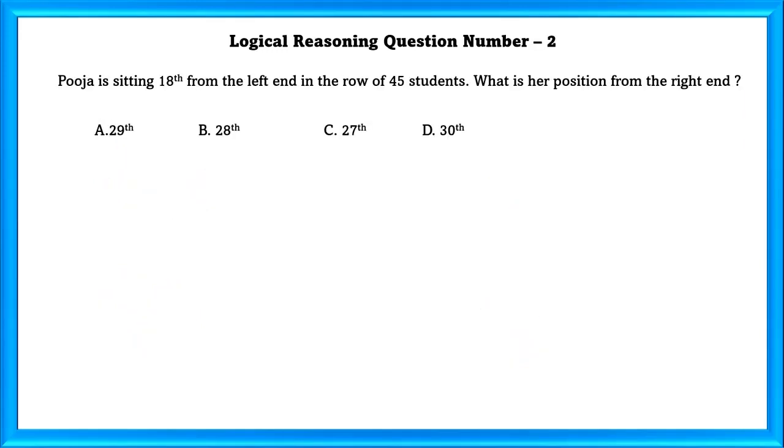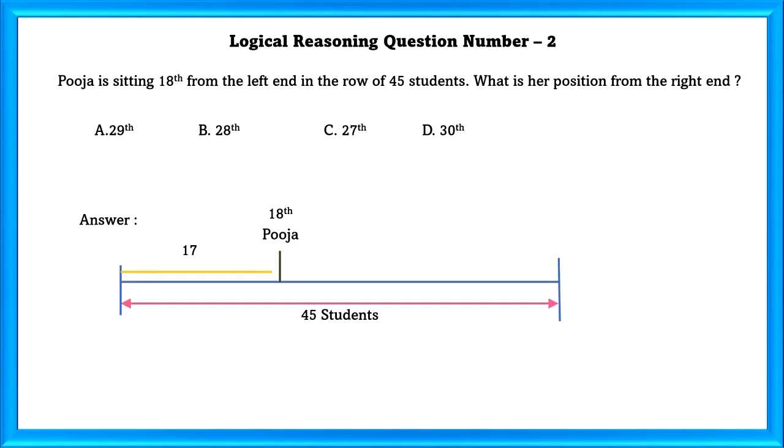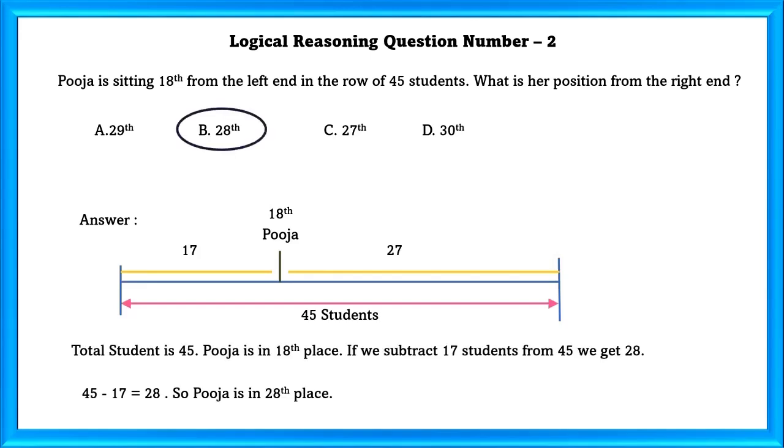Question Number 2: Pooja is sitting 18th from the left end in a row of 45 students. What is her position from the right end? There are 45 students. 17 students are before Pooja and 27 students are after Pooja. Total students is 45. Pooja is in the 18th place. If we subtract 17 students from 45, we get 28. So Pooja is 28th place.